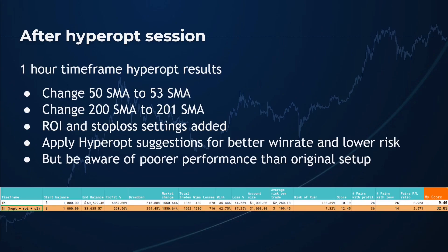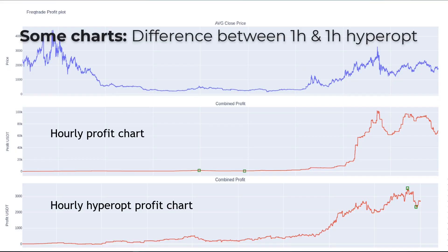You can also see this in the charts. Comparing the original hourly profit chart with the hyperopted profit chart, you can clearly see that the hyperopted chart is much more smooth. The drawdown period is also not the same as the original hourly profit chart. Because of these take profit points, the chart is much more smooth and less risky than just using the Death Cross for your exit signal.